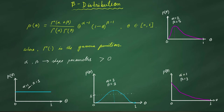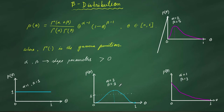For example, when we take alpha equal to 1 and beta equal to 1, we get a flat distribution — the probability of any value between 0 and 1 is 1 in this distribution. In the second distribution, with alpha equal to 3 and beta equal to 3, it looks like a Gaussian distribution. When beta and alpha values are equal, you get a symmetric distribution around the point 0.5.